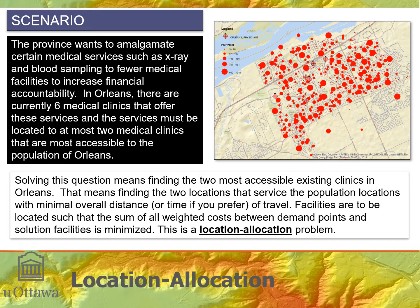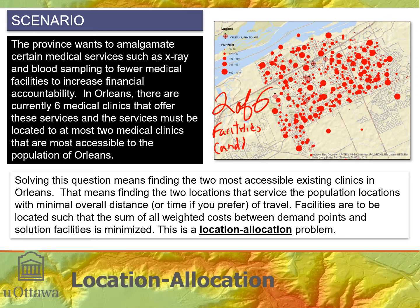In this example, the province wants to amalgamate certain medical services like x-ray and blood sampling to fewer medical facilities to increase financial accountability. In Orleans, there are six medical clinics that offer these services, and the services will have to be located at most two medical clinics. They must be the two medical clinics that are the most accessible to the population of the Orleans region.